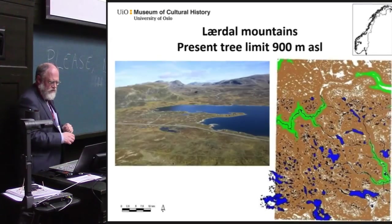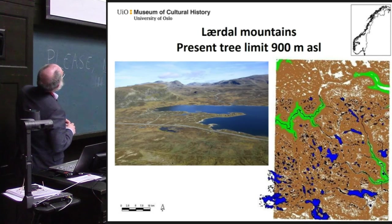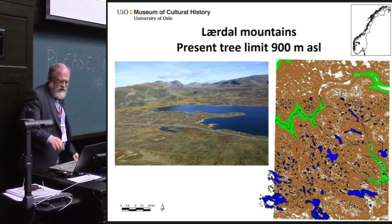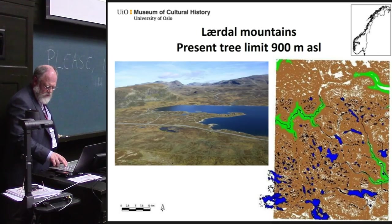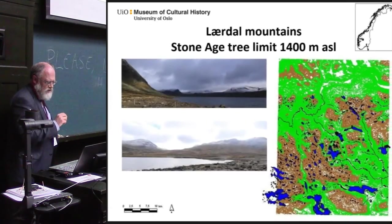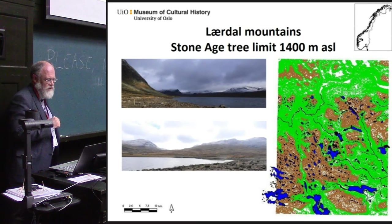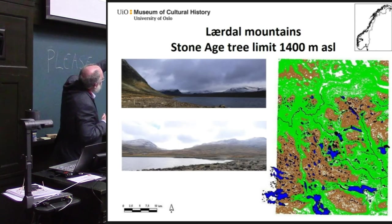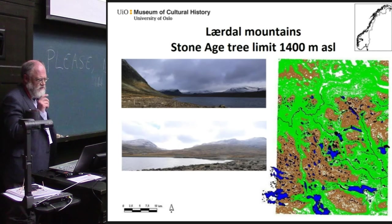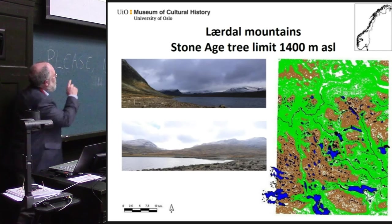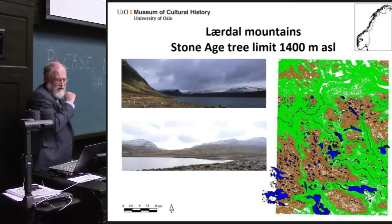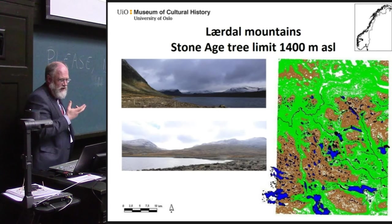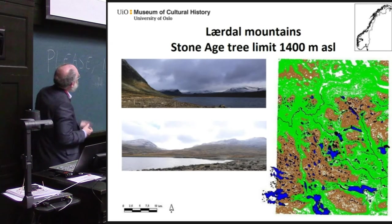When we turn to the Lerdal Mountains, this is how it looks today — the green areas show the modern tree limit at 900 meters above sea level. When we move to the situation during most of the Stone Age, with a tree limit of 1,400 meters above sea level, you can see that almost all the sites are within the forest. It is around most of the lakes that there are Stone Age sites. One could think that people were simply looking for sites around the lakes and not in the surrounding area.